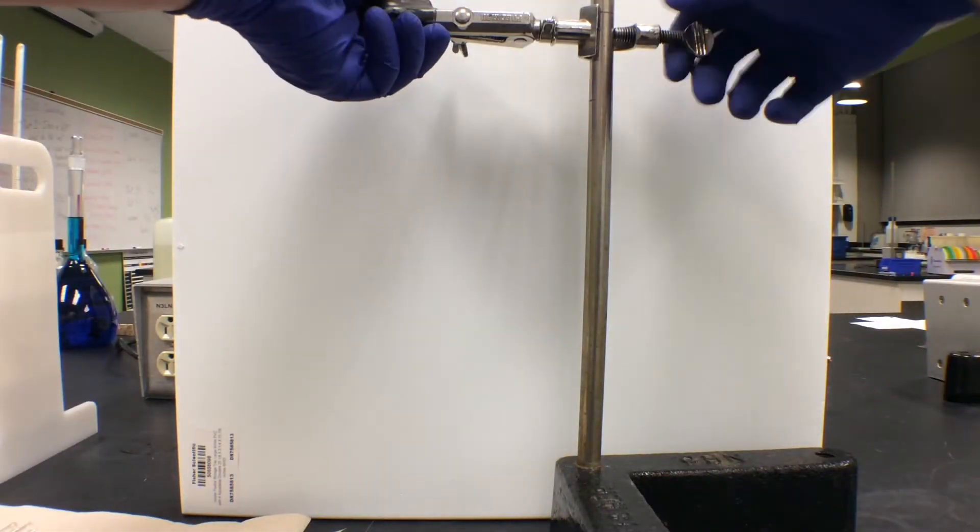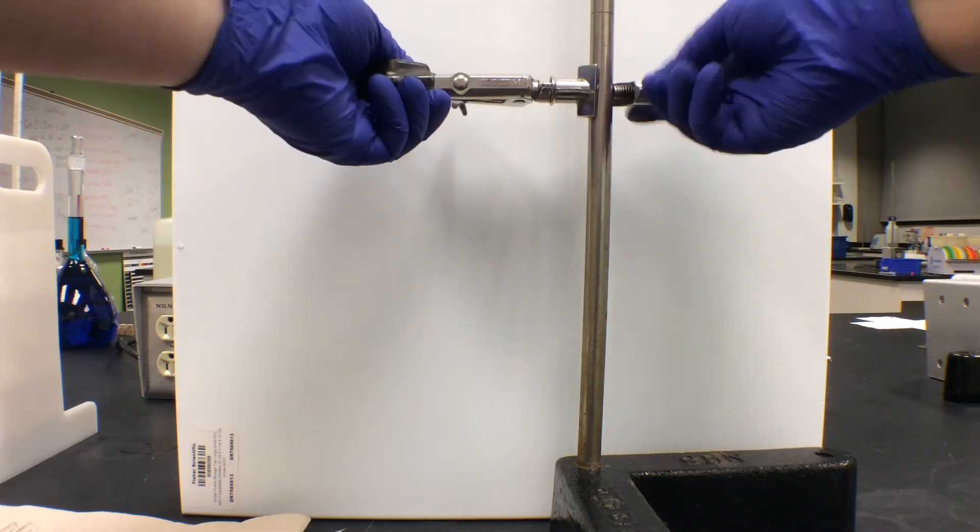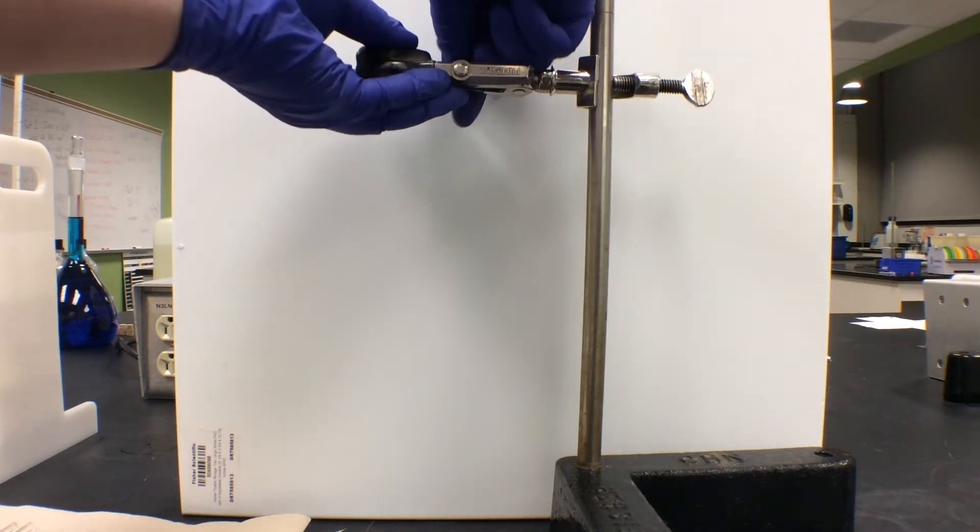First, we must set up a thermometer using a utility clamp, a rubber stopper, and a ring stand.